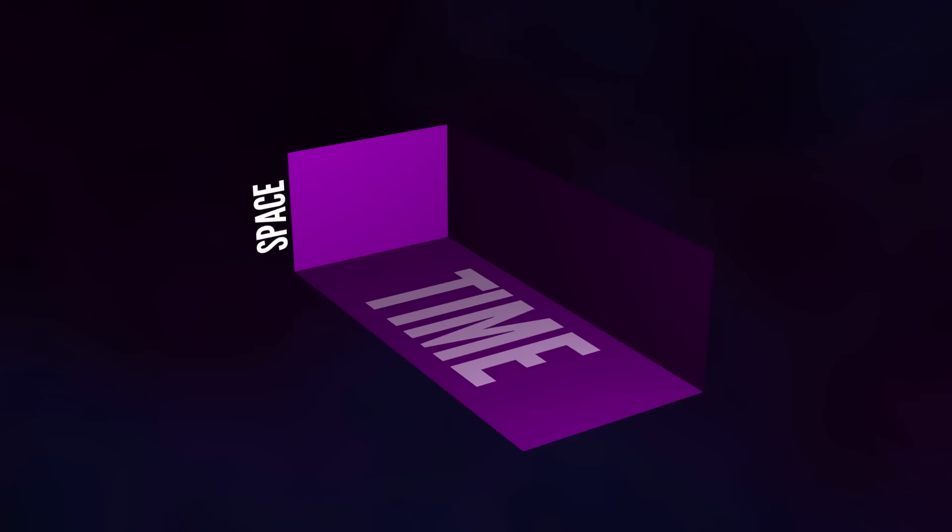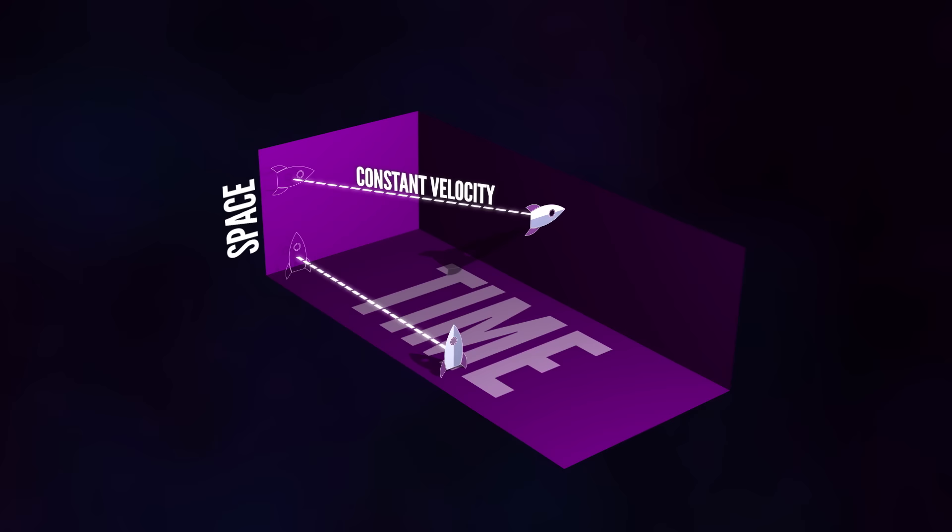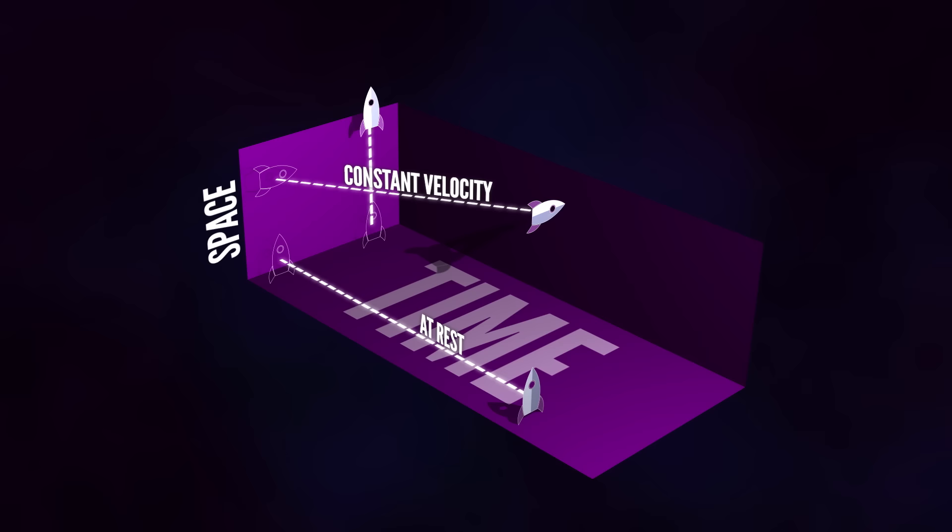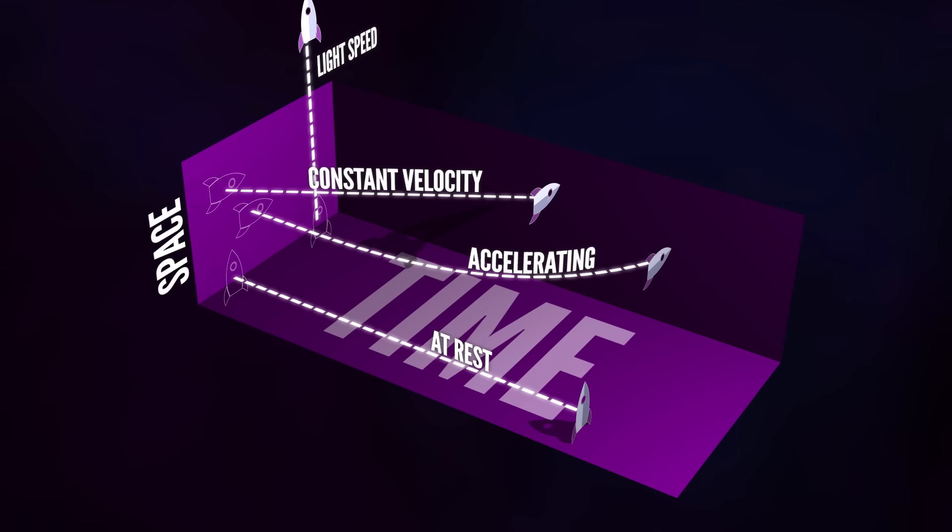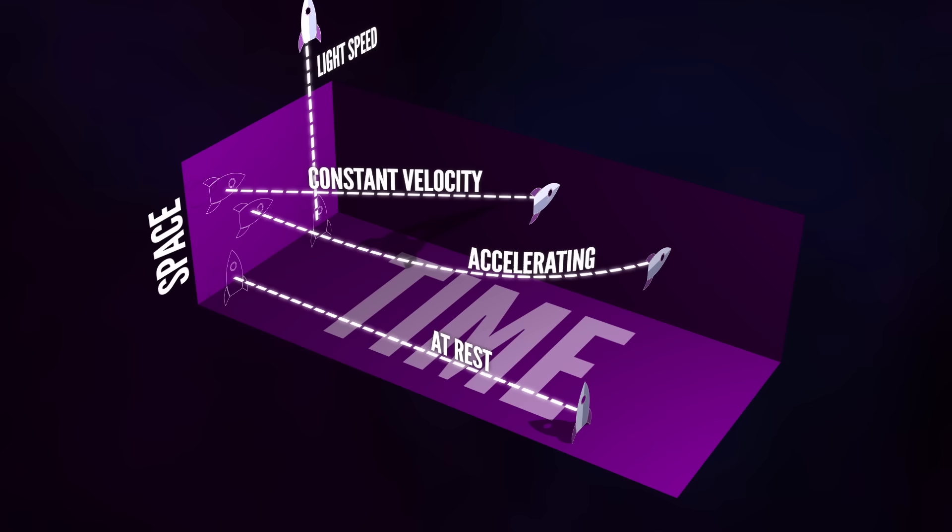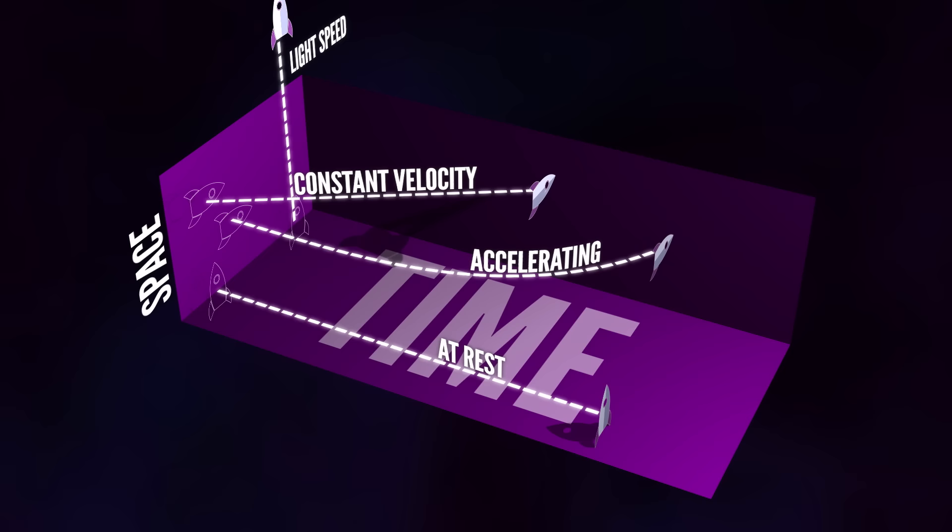The faster an object moves through space, the slower it moves through time. An object not moving through space is moving at top speed through time. An object moving as fast as possible at the speed of light no longer moves through time at all. None of these objects will agree about distances and durations, but there is one thing they will all agree on: that an accelerating object will always have a curved trajectory through this space-time. This is how space-time provides a reference point for acceleration all by itself.